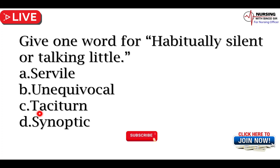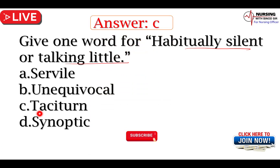Now we can proceed to the next question। Give one word for: habitually silent or talking little। Options: servile, unequivocal, taciturn, synoptic। Answer — taciturn बोला जाएगा। Answer to the C option।